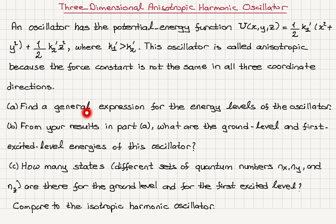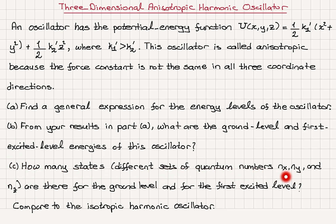Part a: find a general expression for the energy levels of the oscillator. Part b: from your results in part a, what are the ground level and first excited level energies of this oscillator? And part c: how many states — different sets of quantum numbers nₓ, n_y, and n_z — are there for the ground level and for the first excited level, compared to the isotropic harmonic oscillator?